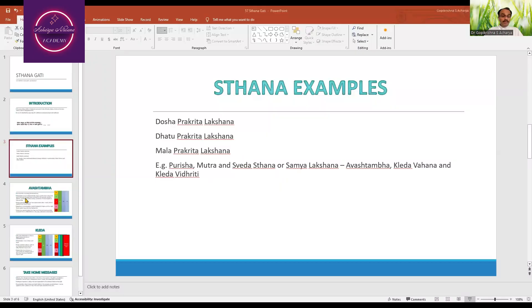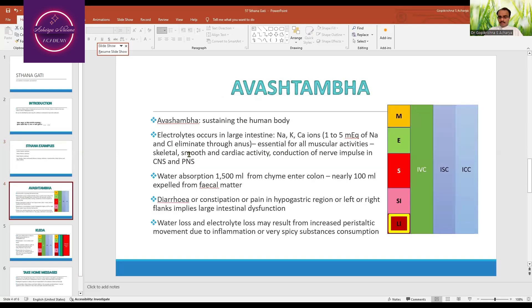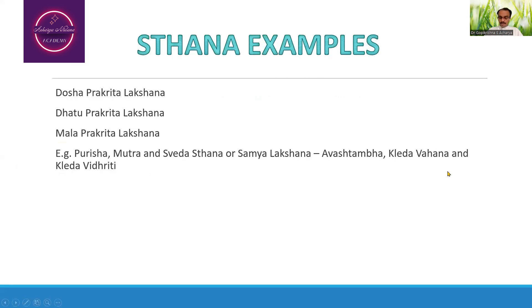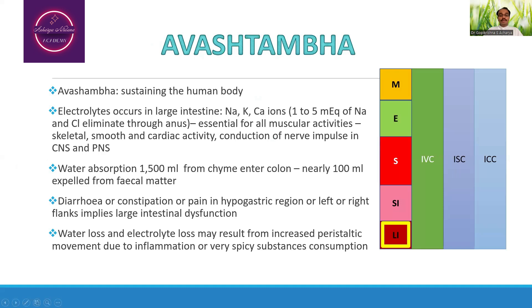Let me discuss this with the context of the functioning of Mala. As per the Ashtanga Hridaya, it is being mentioned that the function of Purisha is Avashtambha. Avashtambha means sustaining the body — that is considered to be the main function of Purisha, or fecal matter.